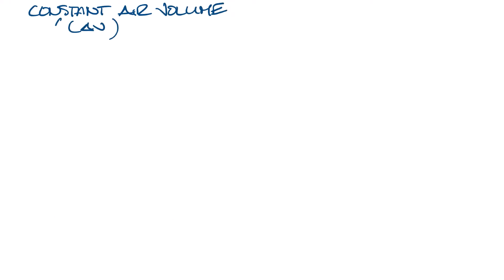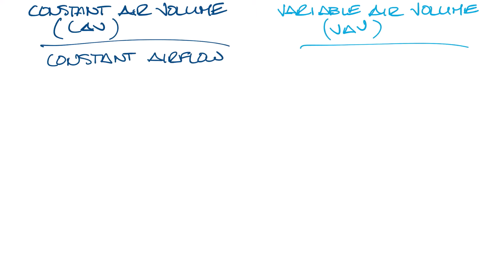Constant air volume, CAV, and variable air volume, VAV, systems are basically what they sound like. Constant air volume systems supply constant airflow and variable air volume systems supply varying airflow.